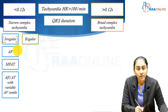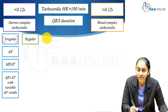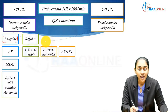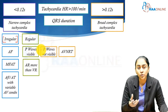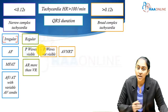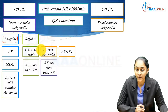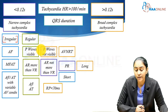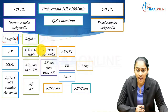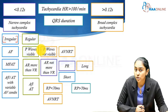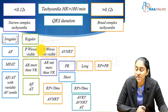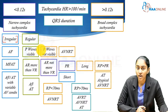Atrial flutter or atrial tachycardia with variable AV conduction blocks can also present with irregular narrow complex tachycardia. For regular narrow complex tachycardia, look at the P waves: if not visible, you're looking at AVNRT; if visible, compare atrial versus ventricular rate. If atrial rate is more, consider atrial flutter or atrial tachycardia. If not, assess the PR interval — short PR with RP less than 70ms suggests AVNRT; short PR with RP more than 70ms could be AVNRT, AVRT, or atrial tachycardia; long PR with RP longer than PR suggests atypical AVNRT or atrial tachycardia.